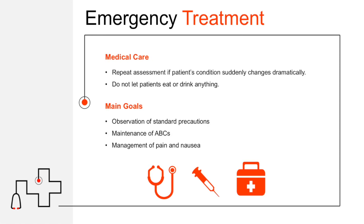Emergency medical care: if your patient's condition suddenly changes dramatically, repeat your assessments so you can modify your care to manage this change. Patients may experience severe pain, severe dehydration, hypotension, and extreme nausea — be ready and prepared to treat all of those things. Patients cannot have anything to eat or drink. If they have abdominal pain, keep them NPO, because if surgery is needed, food or drink could delay treatment and put them at risk for aspiration. Your main goal is to observe standard precautions, maintain ABCs, and manage your patient's pain, nausea, and perfusion status.